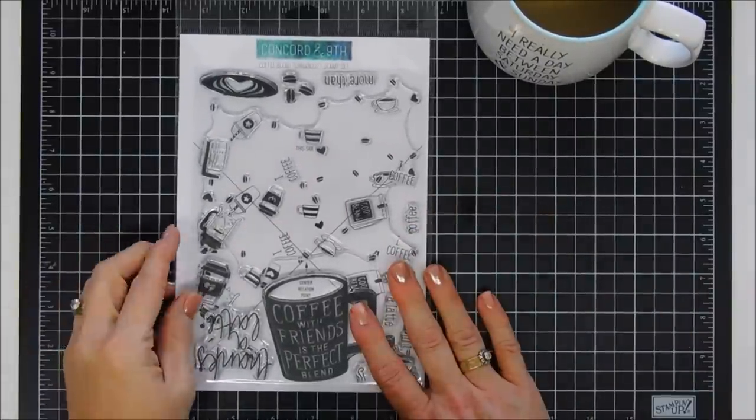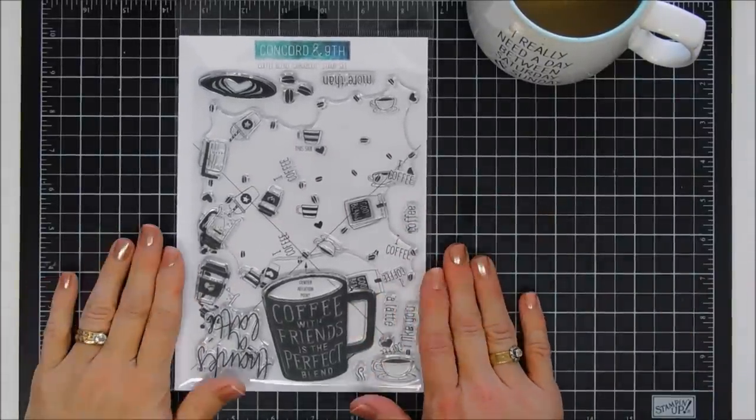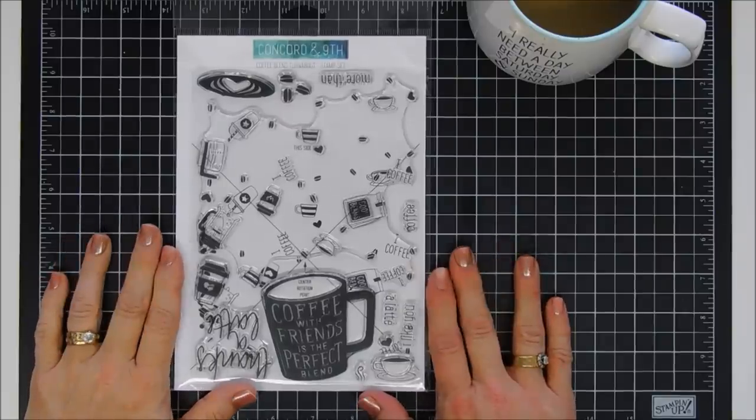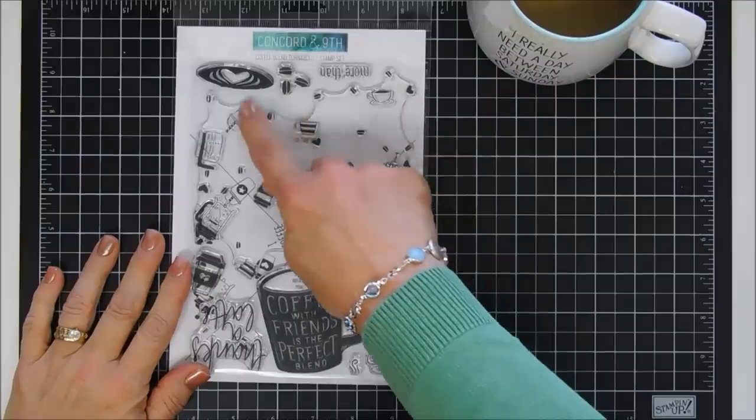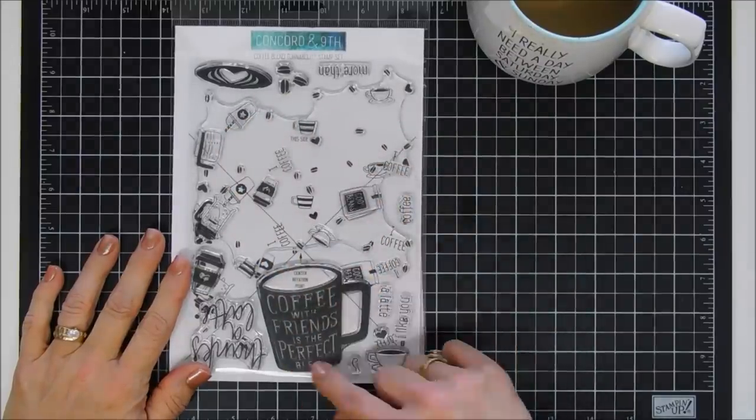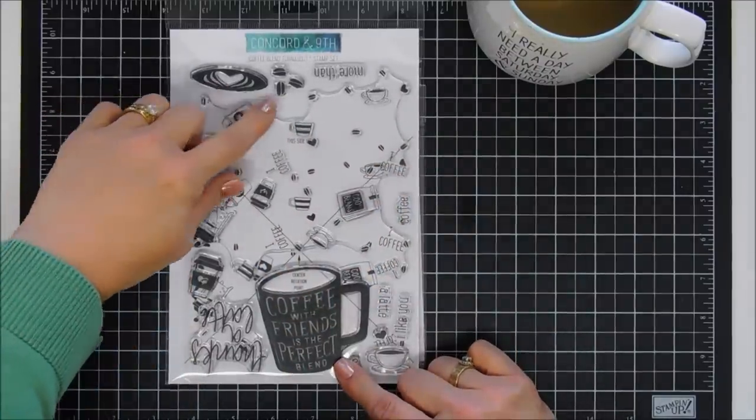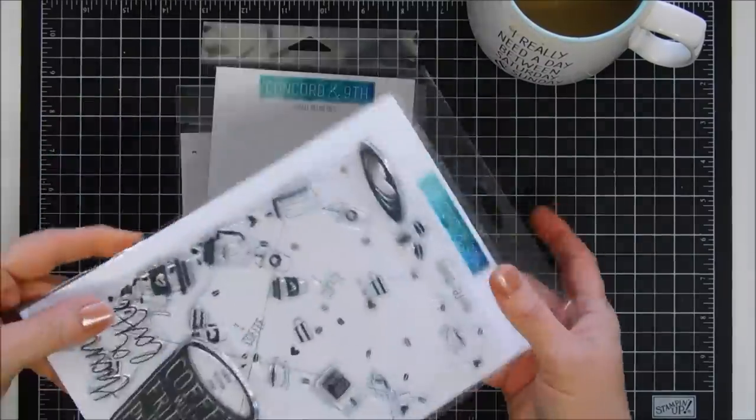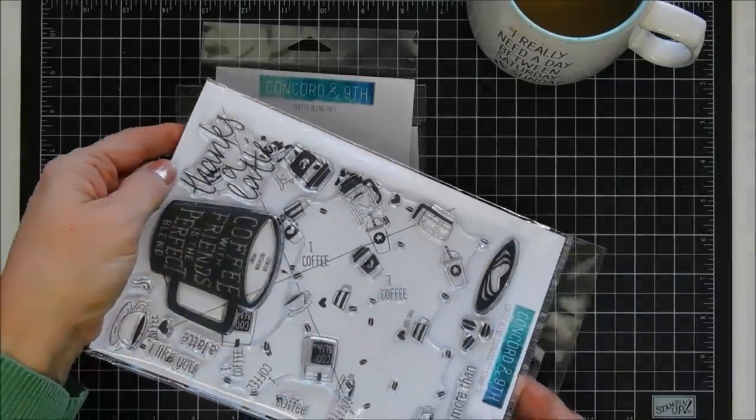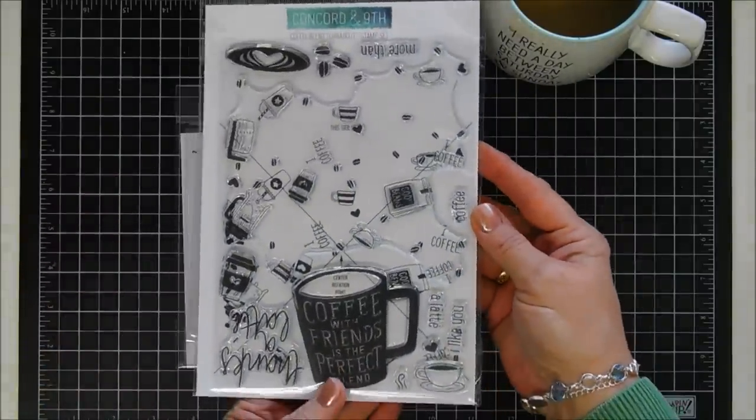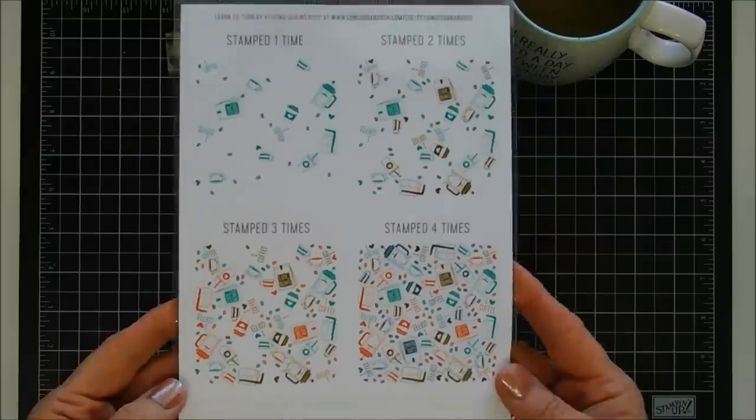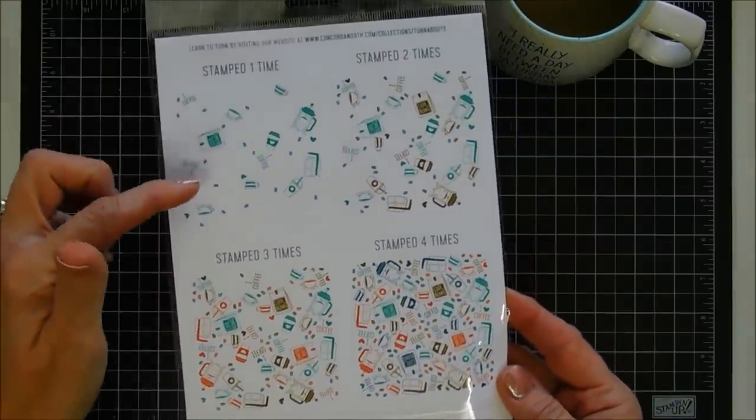This is part of the new release and I'm super excited because it's a turnabout stamp called Coffee Blend Turnabout Stamp Set. It's a bundle but they are sold individually. It's coffee themed and I've never tried a turnabout stamp set before, so this is going to be super exciting.